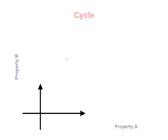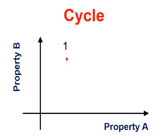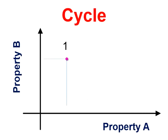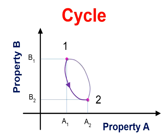When a number of processes in sequence bring back the system to its original state, the system is said to execute a cycle. This is known as a cyclic process or a cycle. For a cycle, the initial and final states are identical.